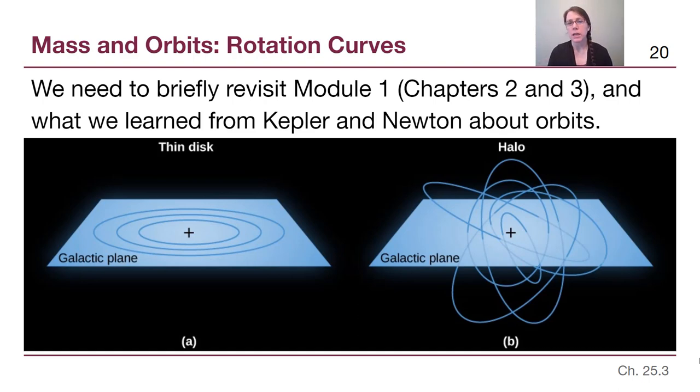But on galactic scales, what this tells us is something about the formation history of the galaxy, and it's something that we'll be thinking more about in the next video. But what we want to concentrate on right now is the fact that these orbits are happening because of gravity, the same exact equation of gravity that we discussed in Chapter 3.